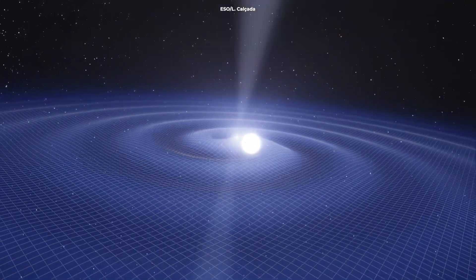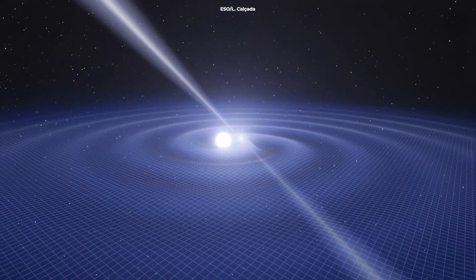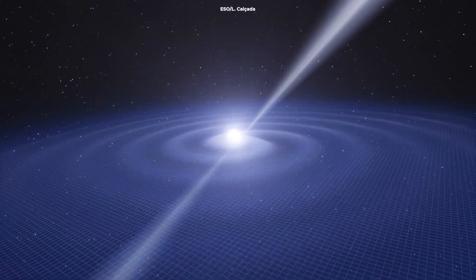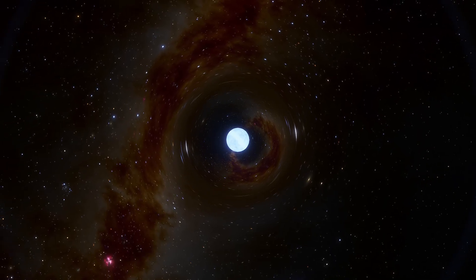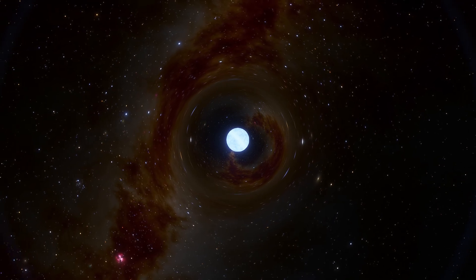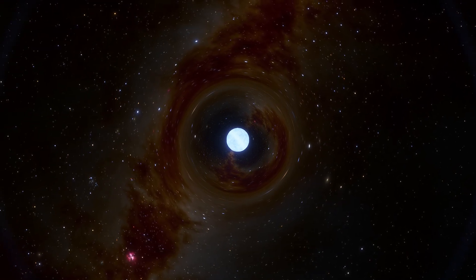They're incredibly dense. Just a teaspoon of neutron star material would weigh about as much as a mountain. This extreme density creates a strong gravitational field, similar to a black hole, but not quite as intense.